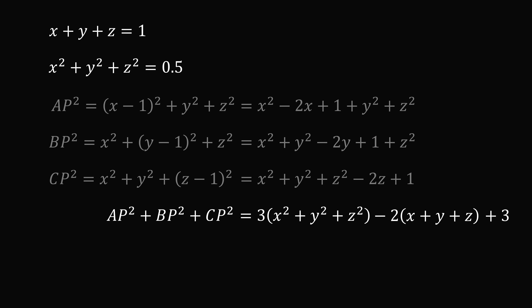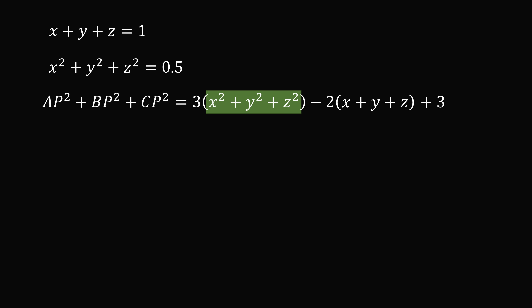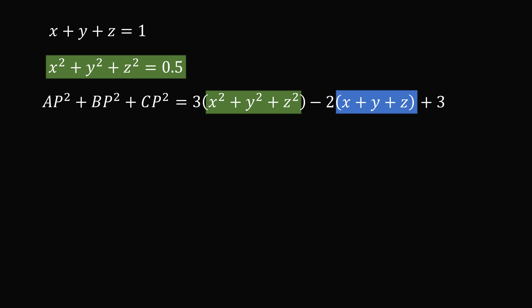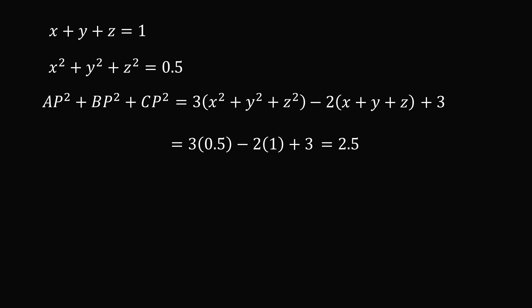Now we can do something magical. We have X squared plus Y squared plus Z squared, and we know from the equation of the sphere that this equals 0.5. We have X plus Y plus Z, and we know from the equation of the plane that this equals 1. Since point P is on both the sphere and the plane, we substitute in these values: 3 times 0.5 minus 2 times 1 plus 3, and that equals 2.5.